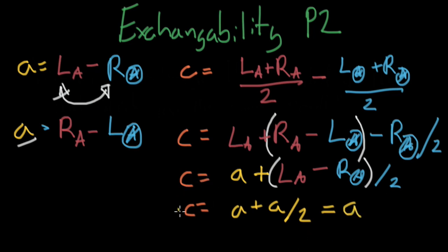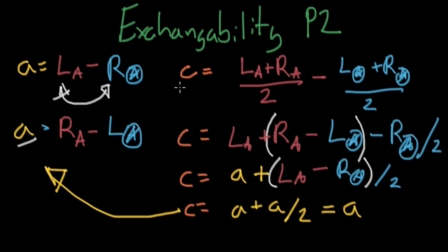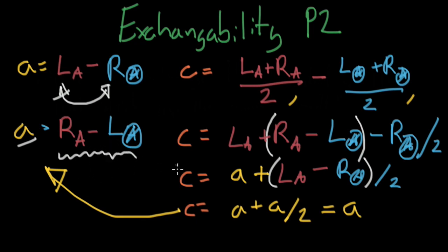Notice we are finally able to prove that causation equals association under exchangeability. This is the real magic of exchangeability — it allows us to say association equals causation. The magic here is that we can't measure causation directly; there was no way to actually treat the entire population and also untreat the entire population. But measuring association is easy: simply take the average of the treated population minus the average of the untreated population. There are some problems though — let's talk about those next time.